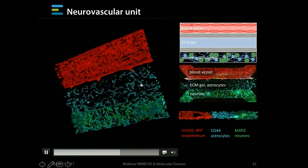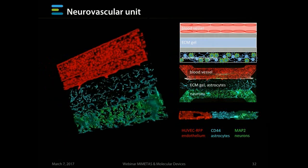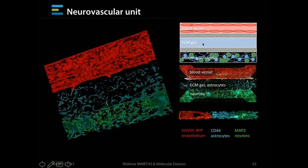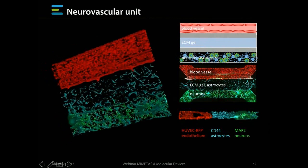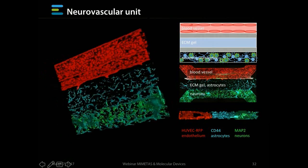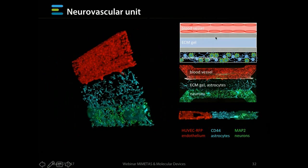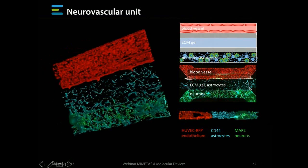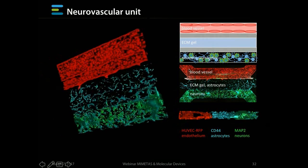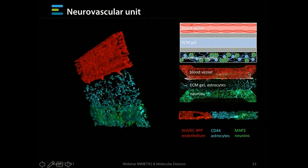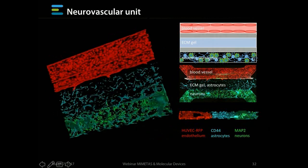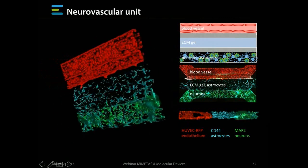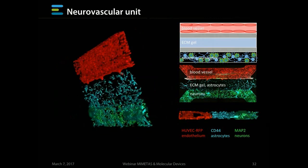This is a combination of a blood vessel, astrocytes, and neurons. The blood vessel has been established in the top perfused channel, with an extracellular matrix gel in the middle, and neurons and astrocytes co-seeded inside a gel in the bottom channel. The astrocytes start to move through the gel towards the blood vessel. The astrocytes are stained with CD44, the neurons with MAP2, and the HUVEC with stably transfected RFP. The astrocytes have migrated into the middle gel and start to move in the direction of the endothelial cells, representing a big step towards the development of a neurovascular unit or blood-brain barrier model.